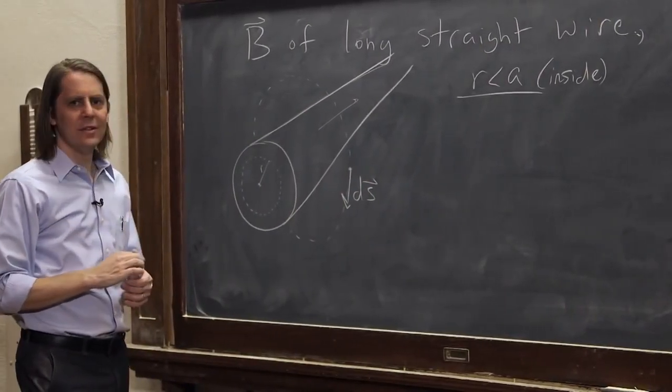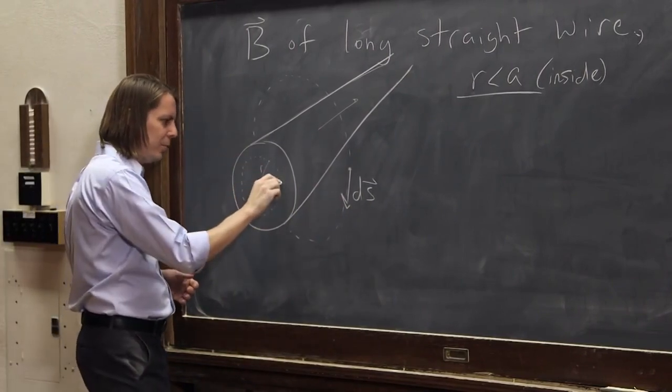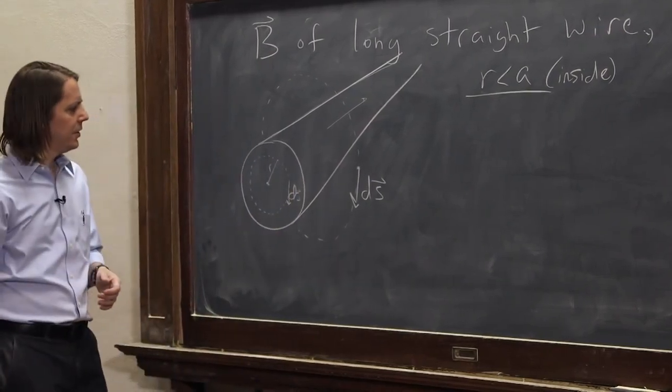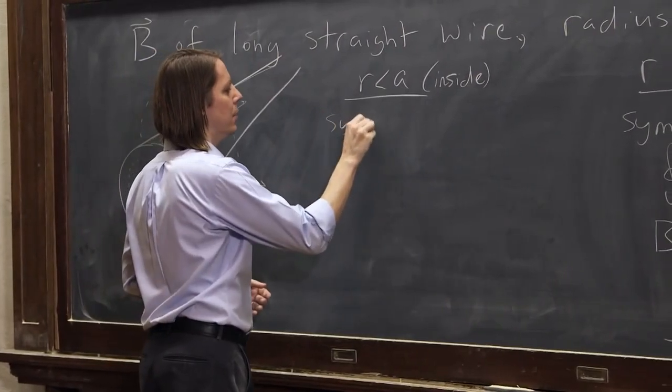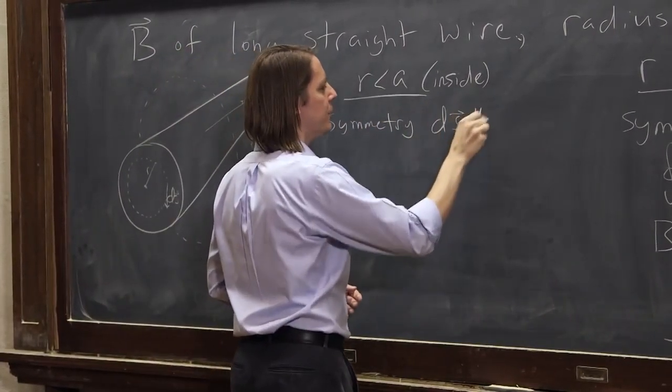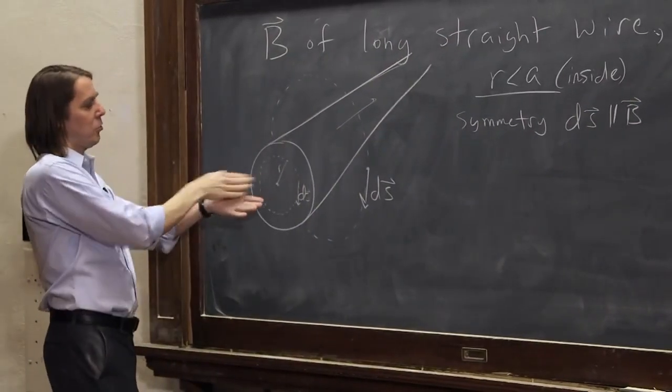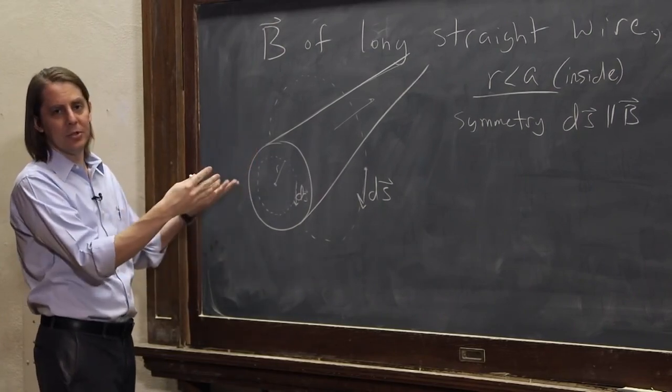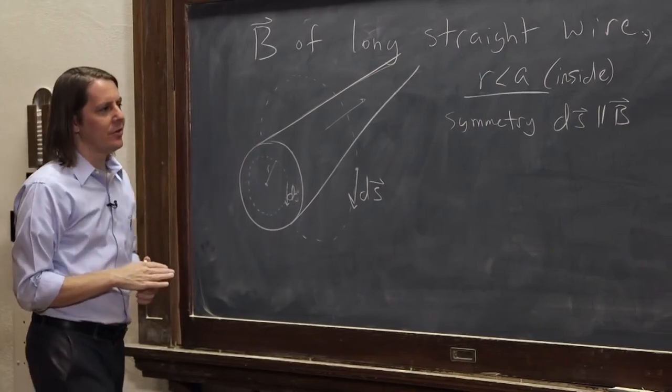So that worked for outside the wire. Now let's do inside the wire. Okay, so this little loop inside the wire, I could draw a practice dS on it like that. And we could say due to symmetry, again, it's also true here, dS is parallel to B. If there's current going through here, it's going to make a B field going around. It doesn't care if it's inside a metal. It won't shield the B field. Current outside won't make a difference.